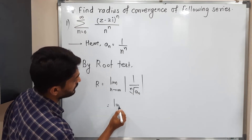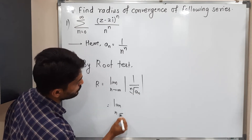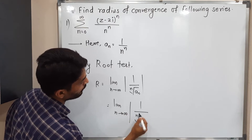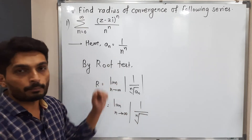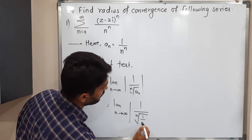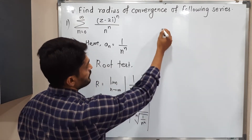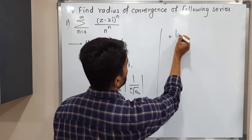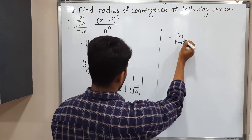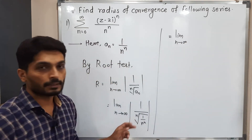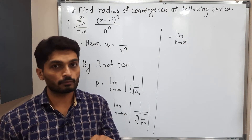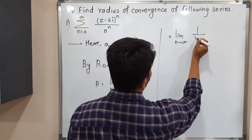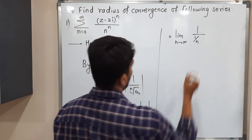This is equal to the limit as n tends to infinity of the modulus of 1 upon the nth root of n raised to n. Our a_n is 1 upon n raised to n. The power n and the root n will cancel each other, so we will have 1 upon 1/n. Since all terms are positive there is no need for the modulus. The nth root of 1 is 1, and the nth root of n raised to n is simply n.